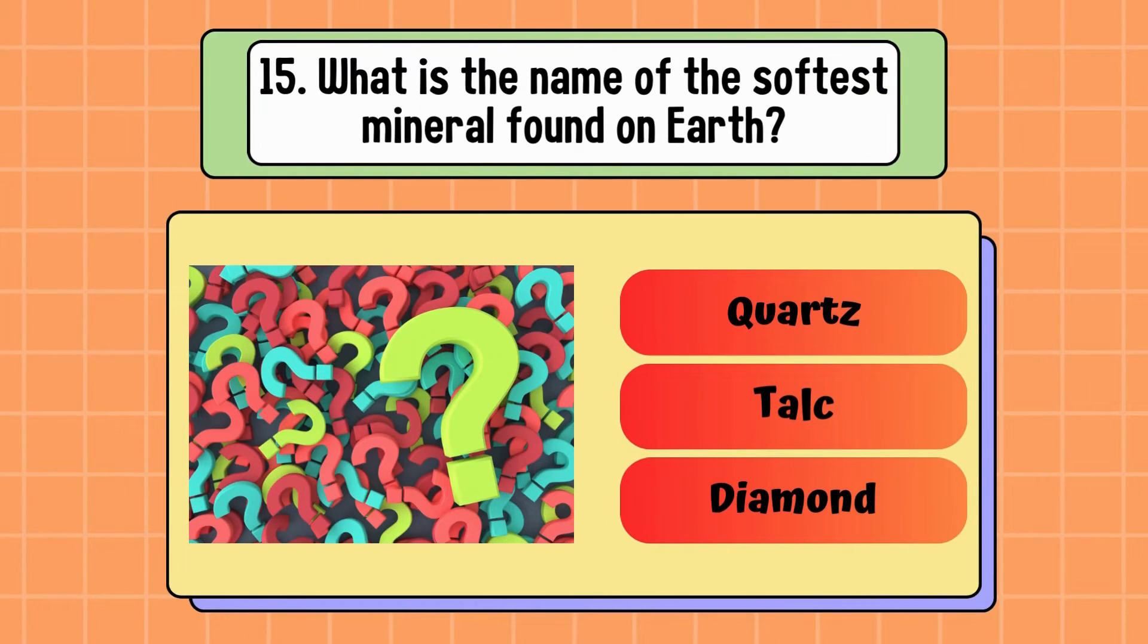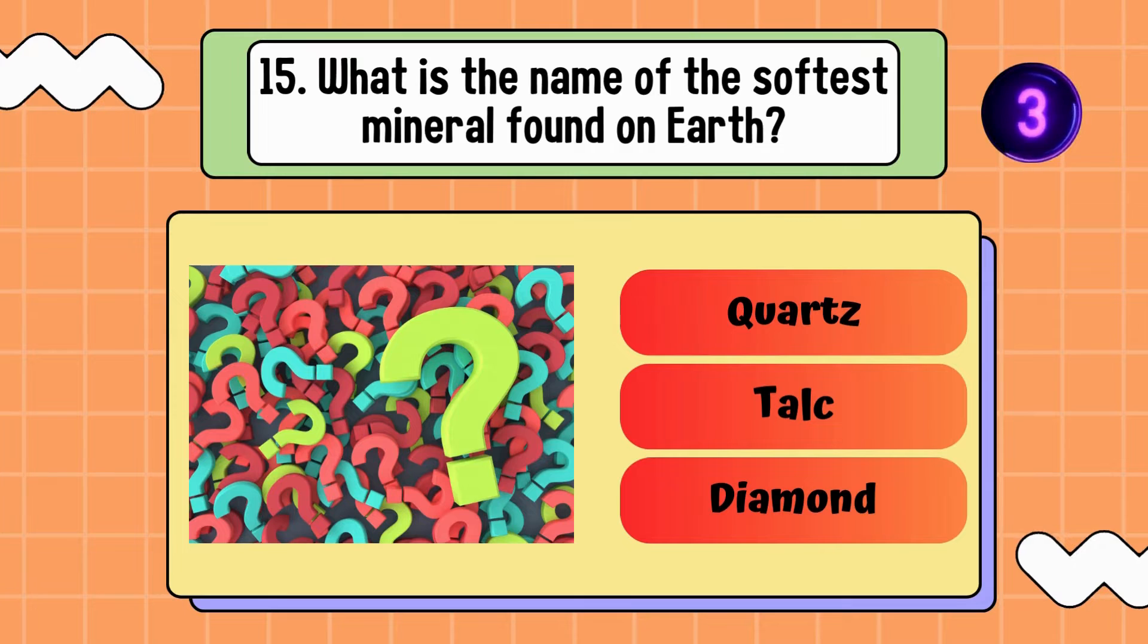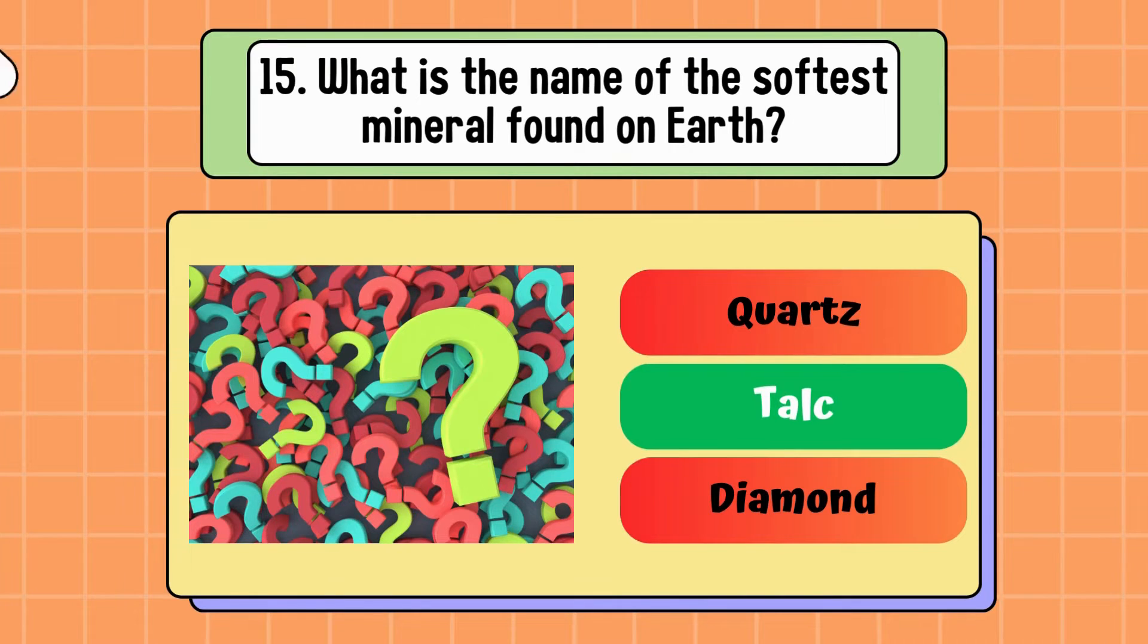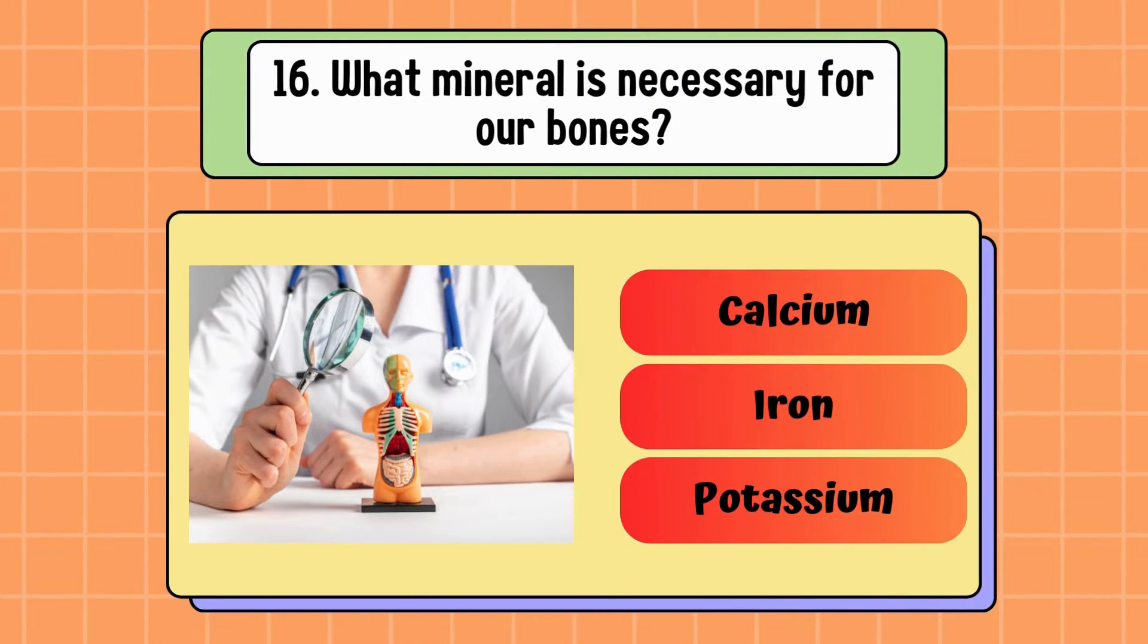What is the name of the softest mineral found on Earth? Quartz, talc, or diamond? Correct answer is talc. What mineral is necessary for our bones? Calcium, iron, or potassium? Correct answer is calcium.